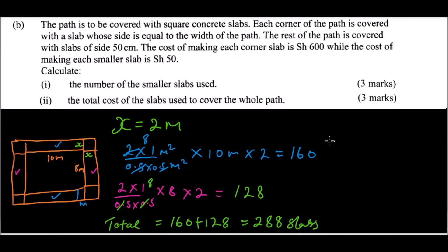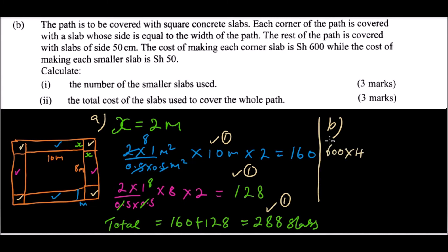For that part you get three marks. Now for the total cost: there are four corner slabs, each costing 600 shillings, giving 4 times 600 equals 2,400 shillings. The 288 smaller slabs each cost 50 shillings, giving 288 times 50 equals 14,400 shillings.